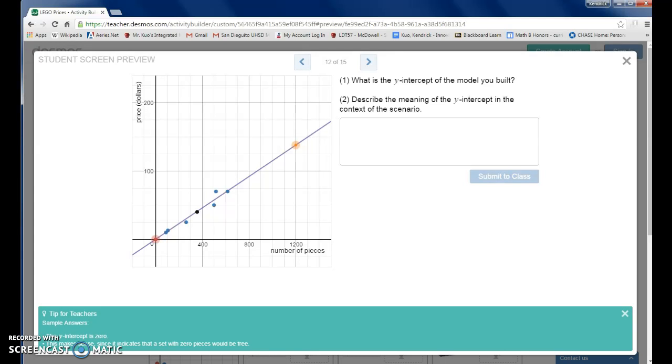So currently I'm on slide 12 of 15 on the Desmos activity, and it's asking you what is the y-intercept of the model you've built. I just want to remind the class that the y-intercept of a graph is where the line crosses the y-axis.